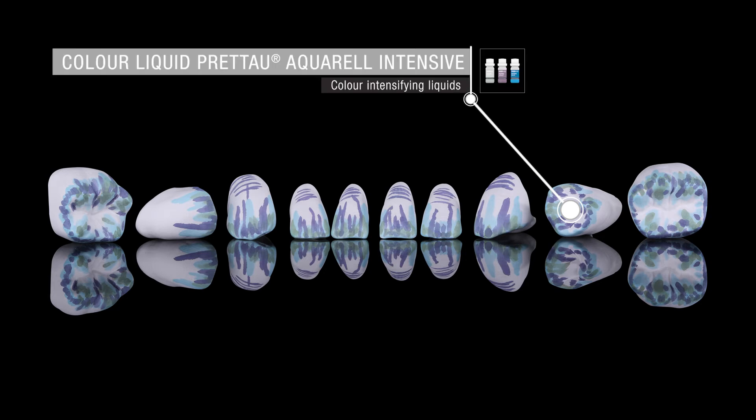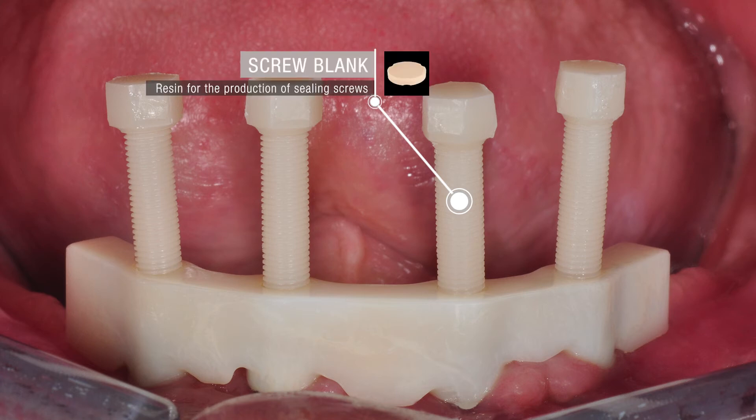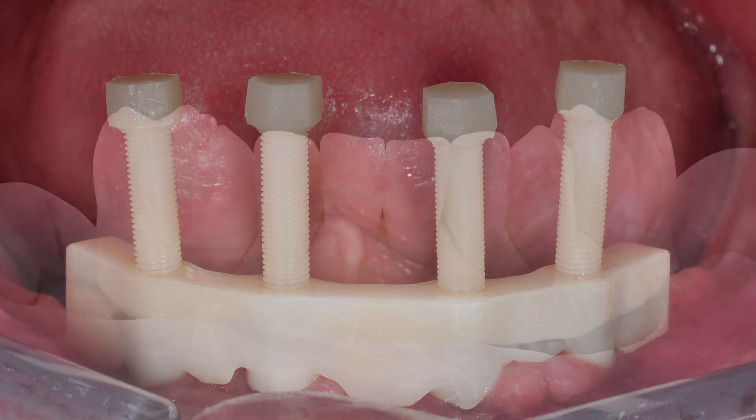The individual teeth were individualized with the color liquids Preto Aquarell Intensive Colors. To seal the screw channels in the bar, specific sealing screws were produced. The individual teeth were then bonded to the secondary structure.